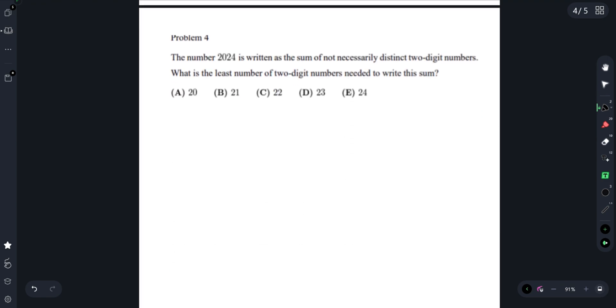Moving on to Problem 4: the number 2024 is the sum of not necessarily distinct two-digit numbers. What is the least number of two-digit numbers needed to write this sum? The biggest two-digit number we can have is 99, and they don't have to be distinct.